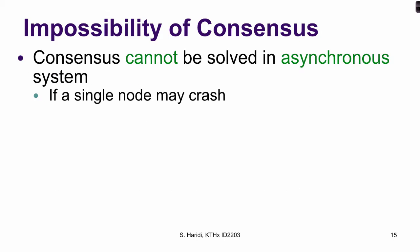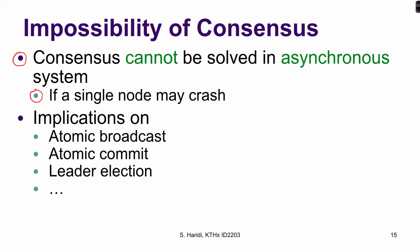Given this model, we have the following result: consensus cannot be solved in an asynchronous system if a single node may crash. If we assume that nodes may crash, it is not possible to solve consensus in the asynchronous system model. This has implications on atomic broadcast, atomic commit, leader election, and many other services over the internet. Basically, you cannot distinguish between a failed process and a slow process or a slow network in an asynchronous system model.